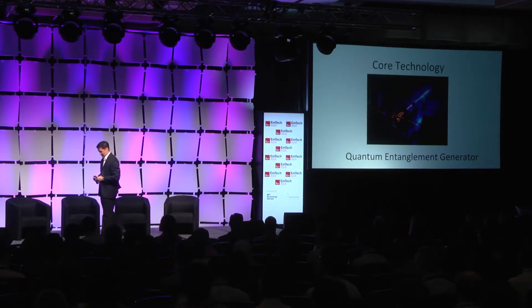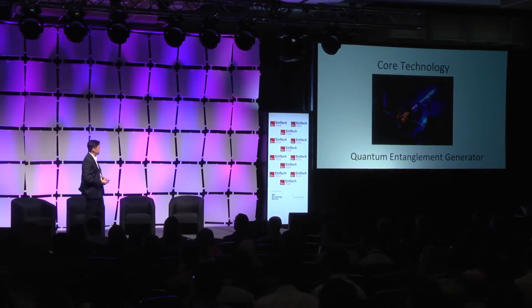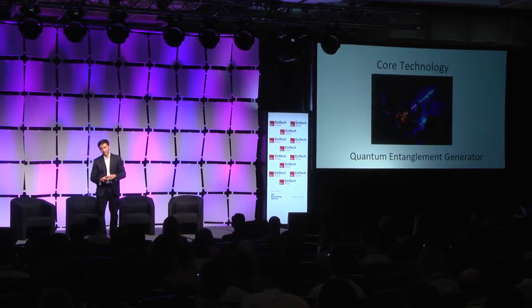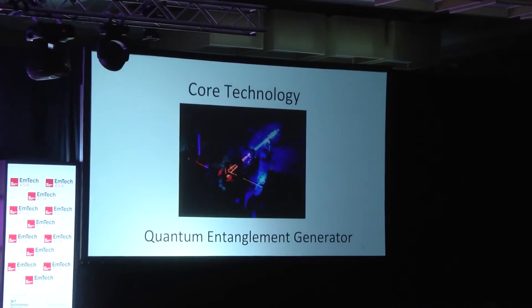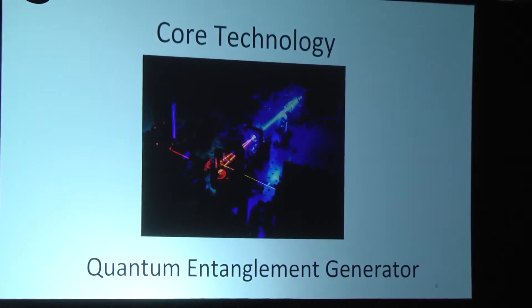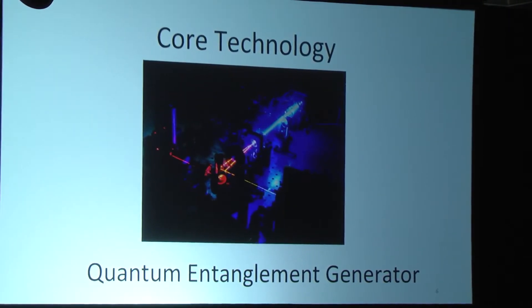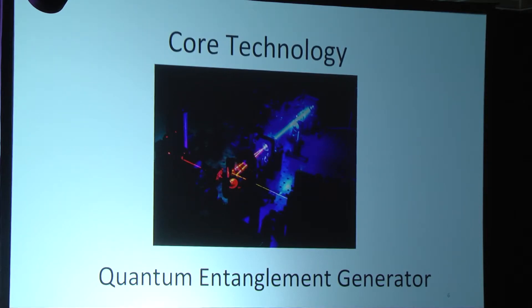The core technology in the quantum key distribution system is the way we generate photons and encode the signals. In this picture you see what we call a quantum entanglement generator. Blue light from a laser — like the kind in a Blu-ray player — goes through a crystal, and this crystal interacts with the blue light and sometimes splits one blue photon into a pair of lower energy photons that are very strongly correlated. We call these correlations quantum entanglement, and we can use them to carry out quantum key distribution.